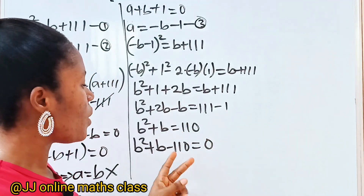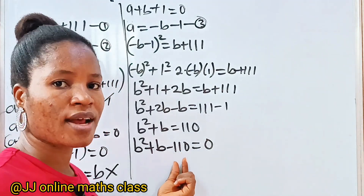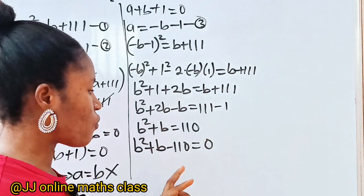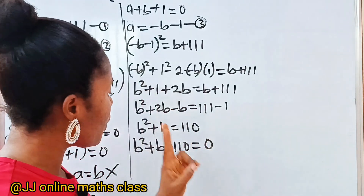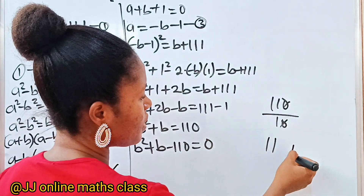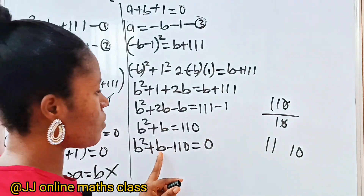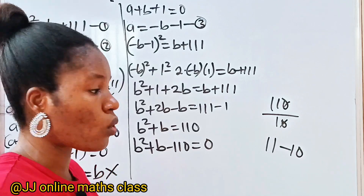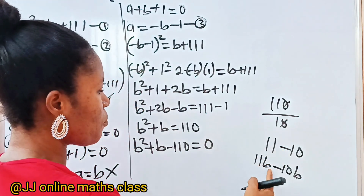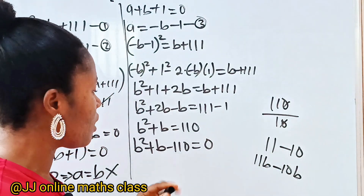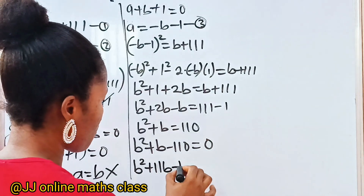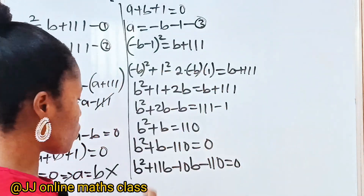This is a quadratic equation. We need two factors of minus 110 that add up to 1. The factors of 110 are 11 and 10. Since the product is negative, it's going to be 11 minus 10 to give positive 1. So we replace B with 11B minus 10B. We have B squared plus 11B minus 10B minus 110 equals 0.